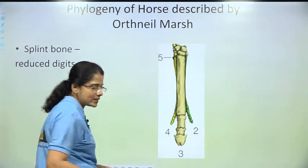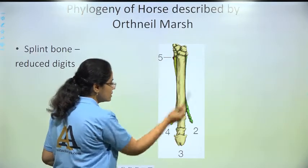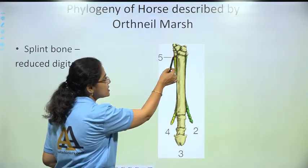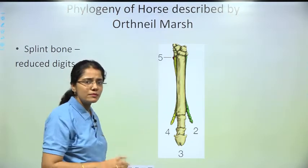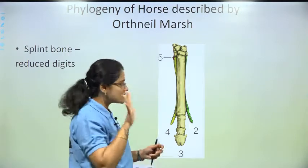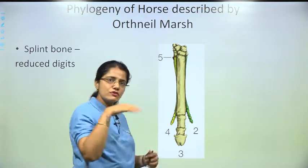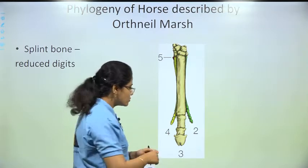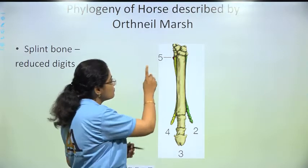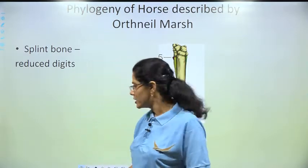Looking at the figure, you can see the fifth, fourth, third, and second digits. The first has become reduced — a splint. As such five should be there, but since the fifth and first are reduced, what remains visible are these three: the second, third, and fourth. The fifth and first have become splint bones — they are reduced digits.